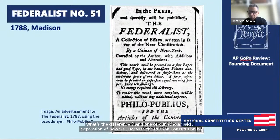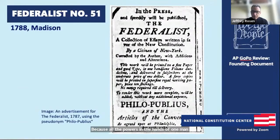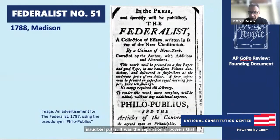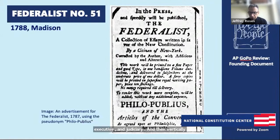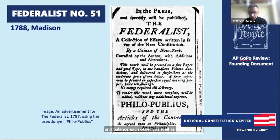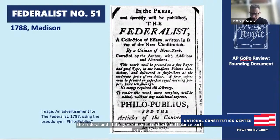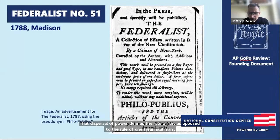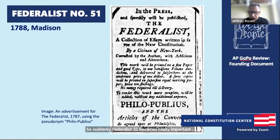It was the separation of powers that ensured that one king or president or dictator couldn't have all the power. Instead, we the people parcel out our sovereign authority among three different branches — the legislative, executive, and judiciary — and then vertically between the federal and state government, allowing each branch to check and balance the others. That dispersal of power defines the rule of law as opposed to the rule of one tyrannical man. Federalist 51 becomes really important — it's not some boring abstraction, it's the heart of what distinguishes America from a country where one dictator can order millions of people to be killed just because he wants to.